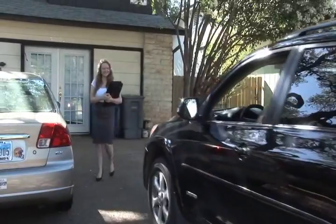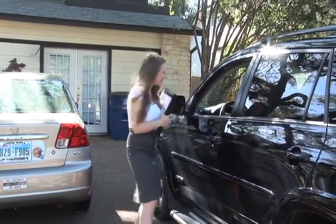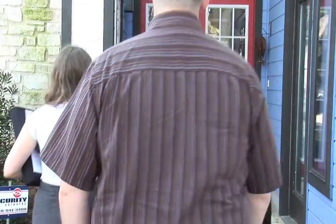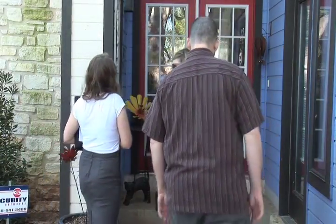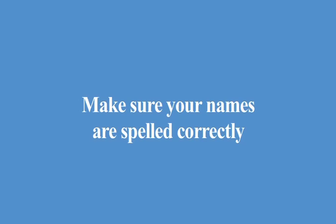Paragraph one, Parties. This paragraph identifies all parties to the lease, including the landlord and tenant. Remember that the landlord is the owner, lessor, and sub-lessor of the property. Property managers or property management companies should not be listed as the landlord. If there are multiple tenants, confirm that all tenants are identified in this paragraph. Make sure your names are spelled correctly.